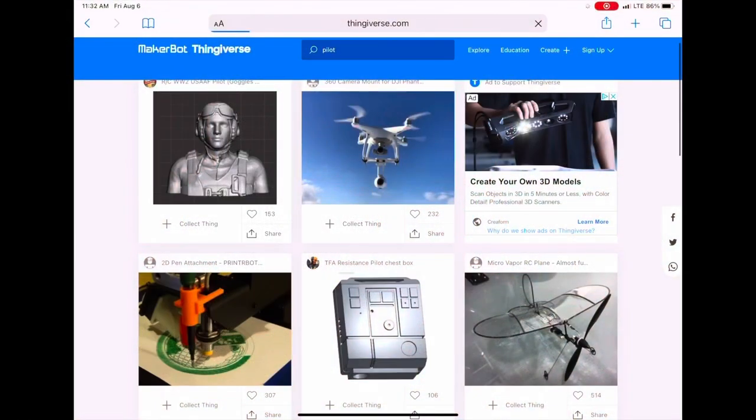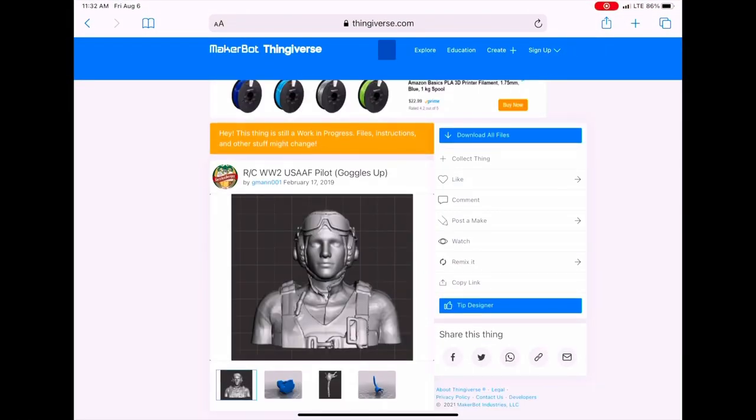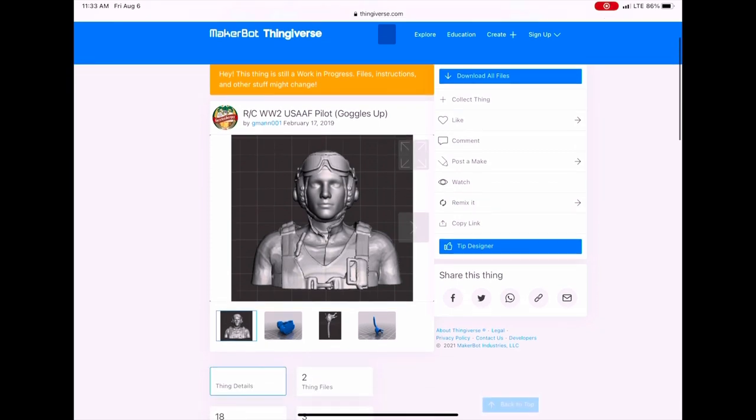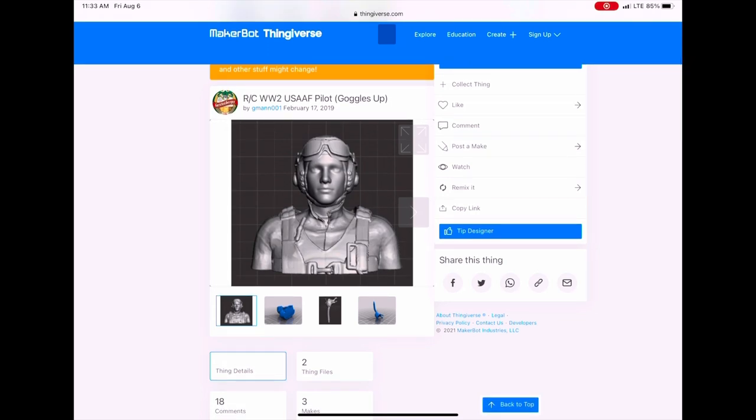I went out to Thingiverse, found a pilot that I really liked, met the era that I was looking for, so I printed him off. At the time I didn't have my resin printer yet, so I used my TAS-5, which is an FDM printer, to print it off.